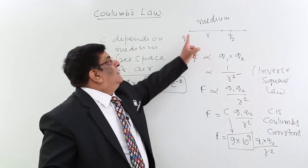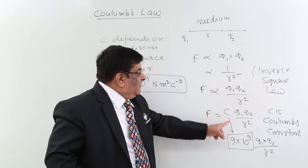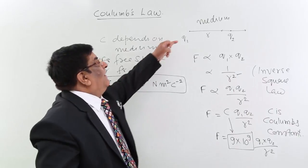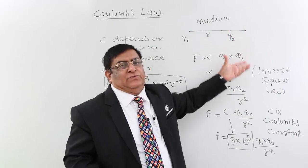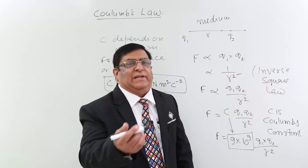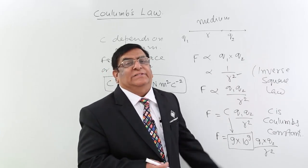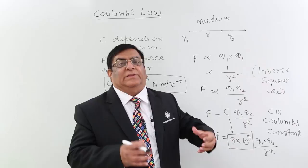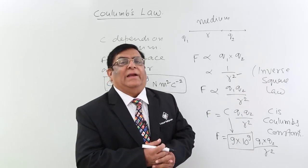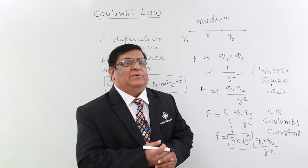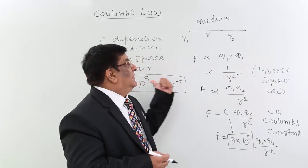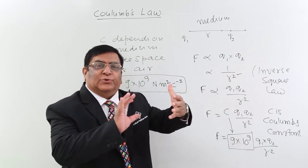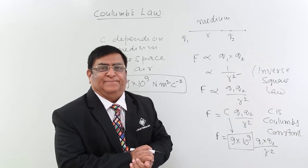Two things: number one, the magnitude will be given by this equation and the direction will be along the line. So this is Coulomb's law. In the next lecture we will see how this C changes with the medium and there is a characteristic known as permittivity in the medium which affects this Coulomb's constant or the force between two charges. Thank you.